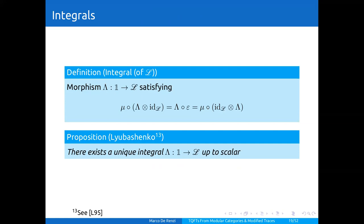This definition has this precise form because we're in the unimodular case. Modular categories are in particular so-called unimodular categories. More generally, the integral for the co-end L is a morphism whose source is an invertible object called the object of integrals, but in modular categories this object of integrals is the tensor unit. An important proposition of Lyubashenko is that there exists a unique integral for the co-end, unique up to scalar — an analog with Sweedler's result for finite-dimensional Hopf algebras.